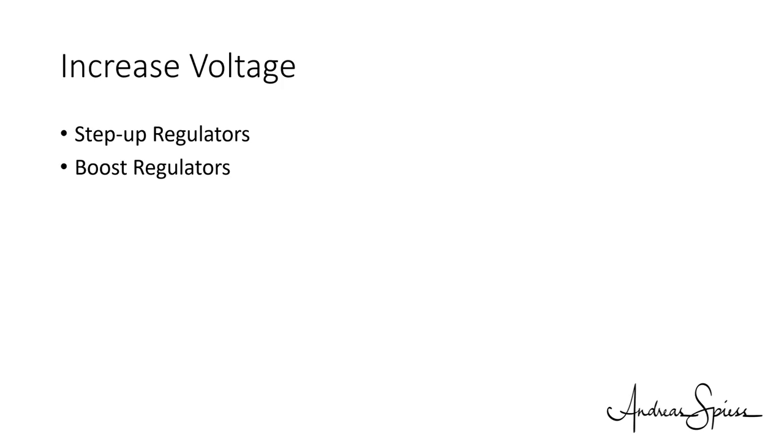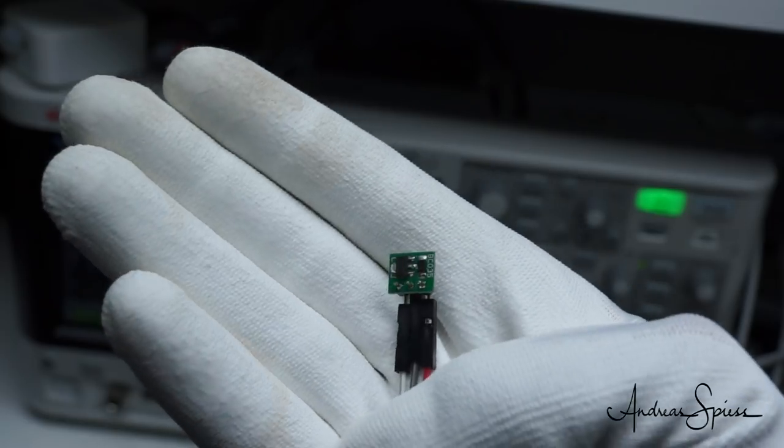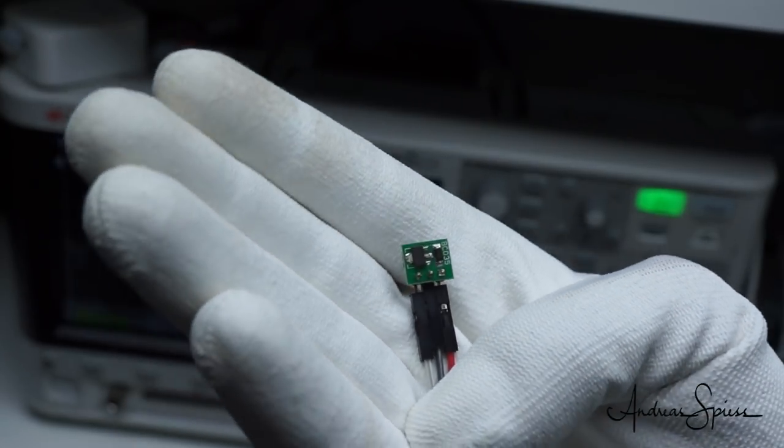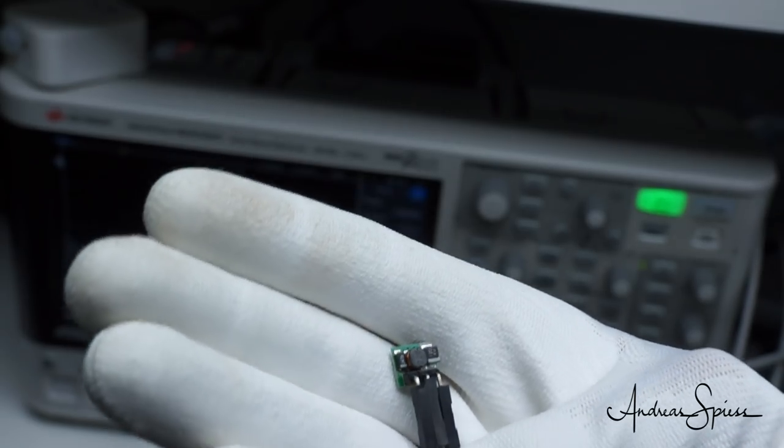Let's assume, you still want to power a 3.3V device, and you only have an AAA battery with 1.2V. With this small boost converter, you can do that. And it delivers enough energy for an ESP chip. Maybe something for your next project?